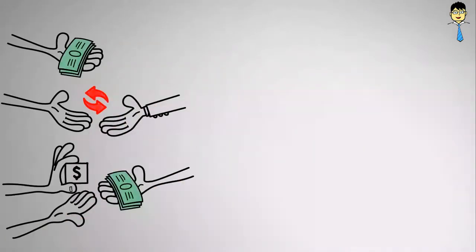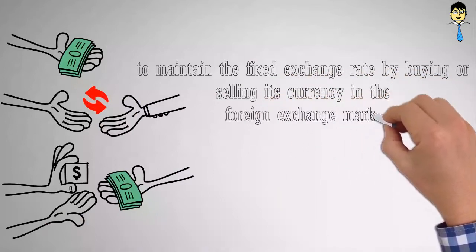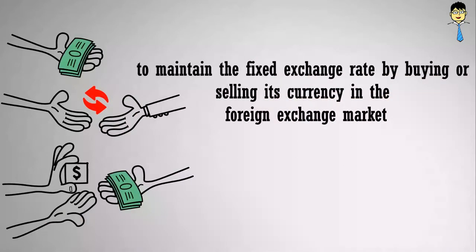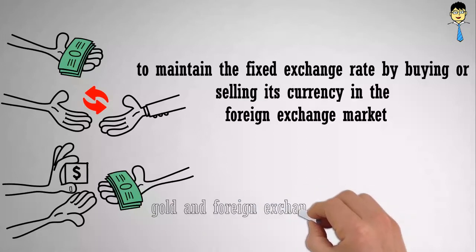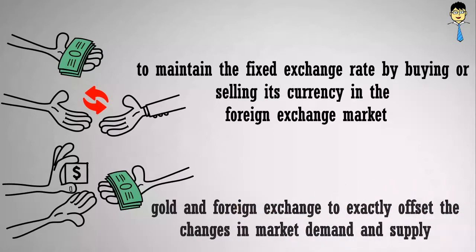The government is committed to maintain the fixed exchange rate by buying or selling its currency in the foreign exchange market using its reserves like gold and foreign exchange to exactly offset the changes in market demand and supply.